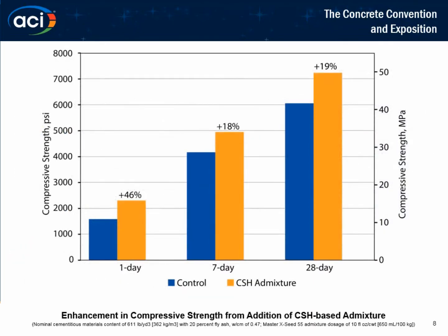Here are a couple of data charts showing the performance of this product. When used on a given mix, this technology increases the overall strength of concrete, generally from the one-day period all the way out through 28 days. The strength enhancement depends on the reference mix — the higher performance the reference mix, the more strength enhancement you will see. This is a 611-pound cement mix, and we're getting between 20% to 46% strength increase using these CSH nanoparticles.